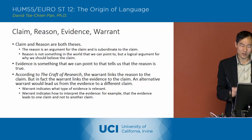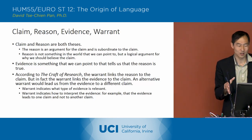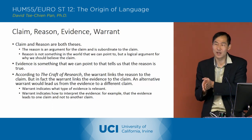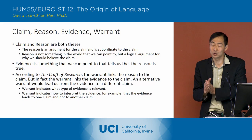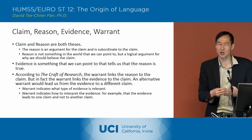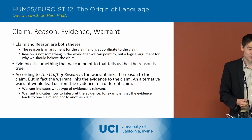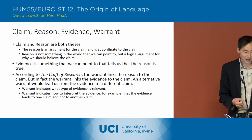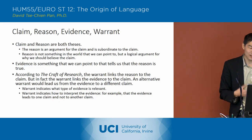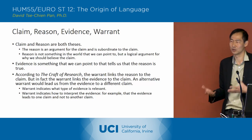And then finally, according to the Craft of Research, the warrant links the reason to the claim, but in my argument here, the warrant links the evidence to the claim, and an alternative warrant would lead us from that same evidence to a different claim. So that's one of the ways you can test that you've got the warrant right — you could say, okay, this allows us to think of a different warrant and leads us to a different claim. The warrant indicates to us methodologically what type of evidence is relevant for the analysis, and it also indicates how to interpret the evidence — that the evidence leads to one claim and not to another claim.